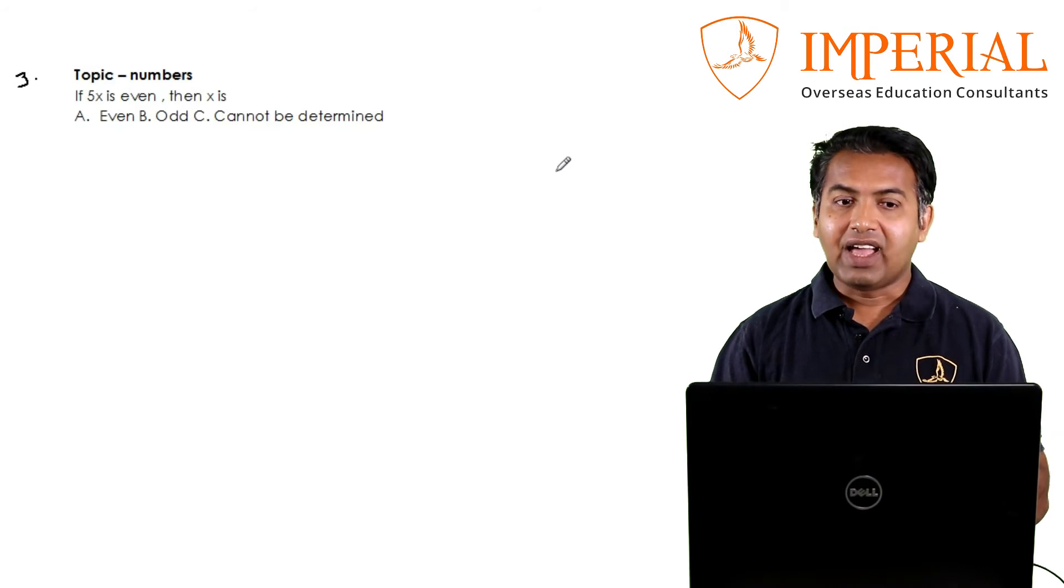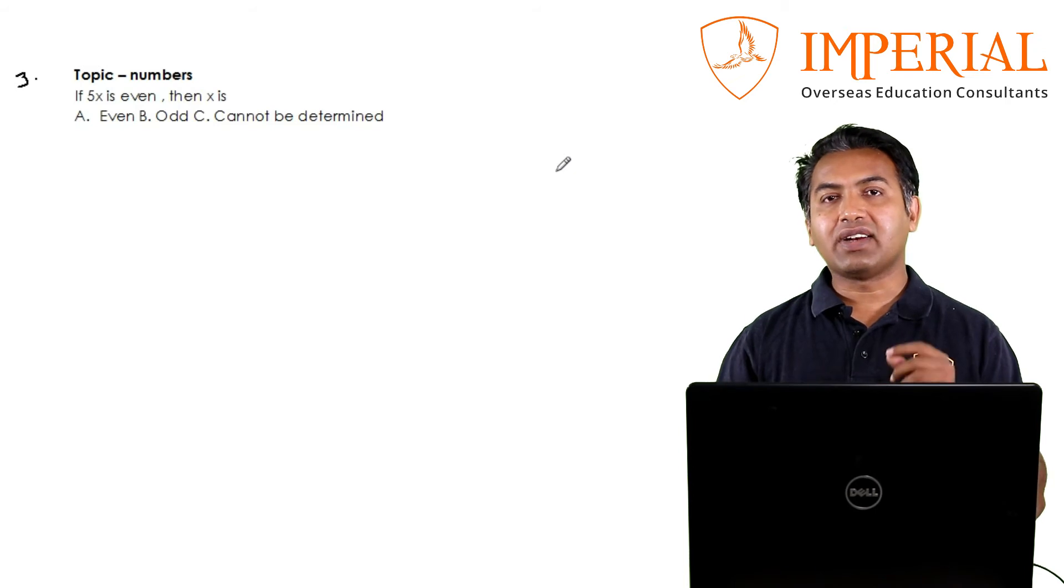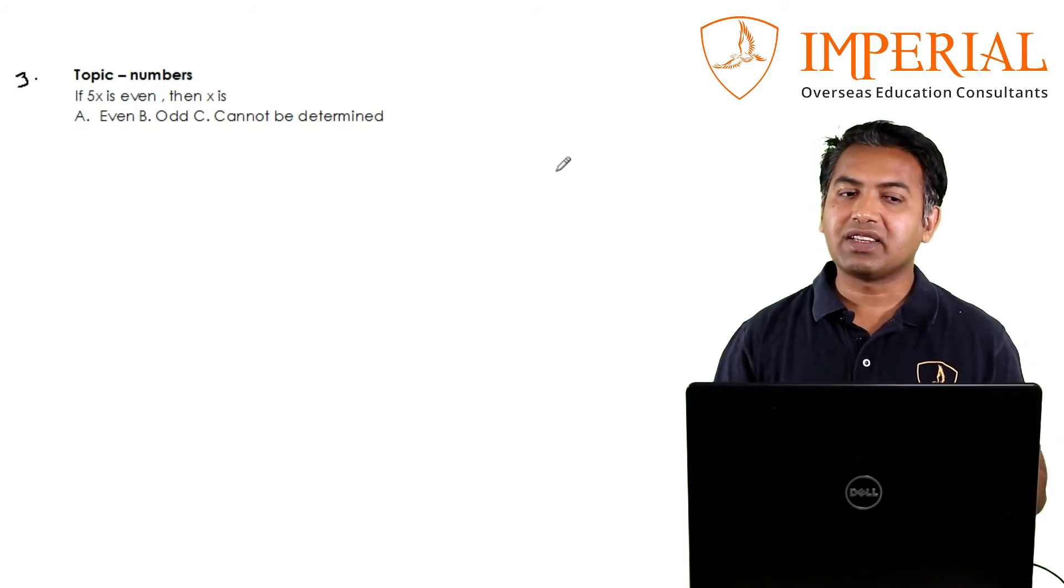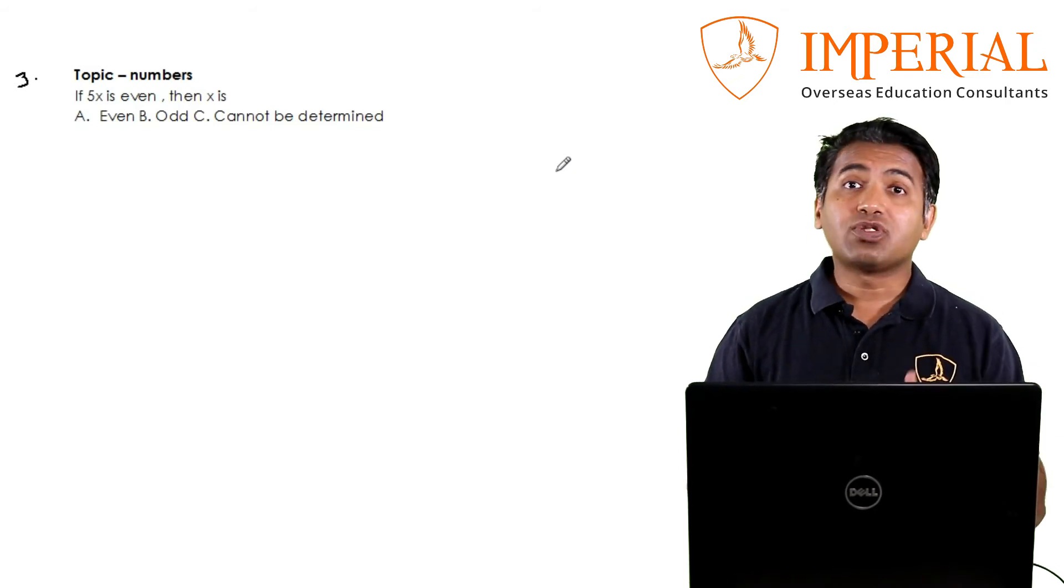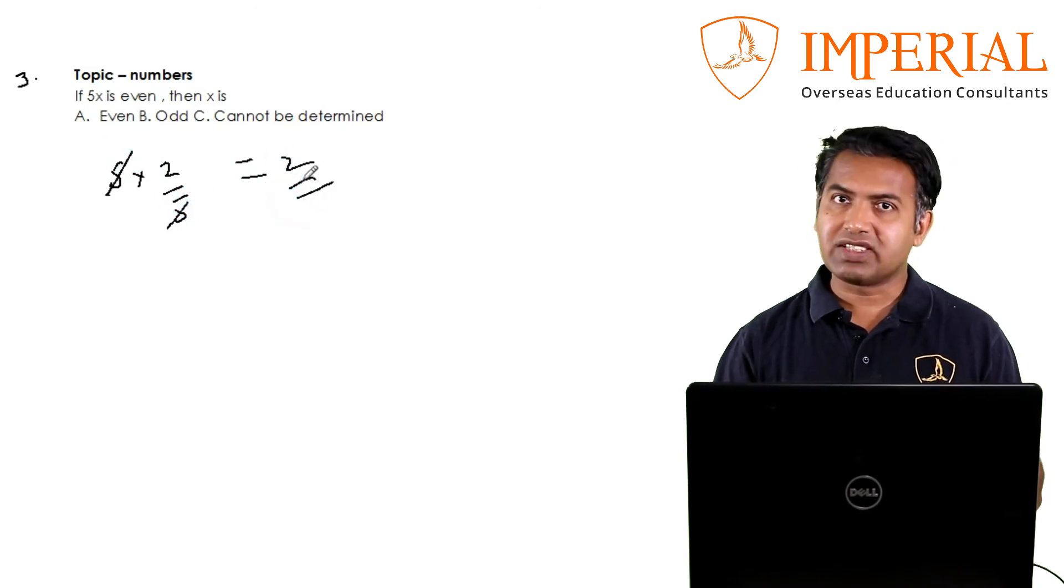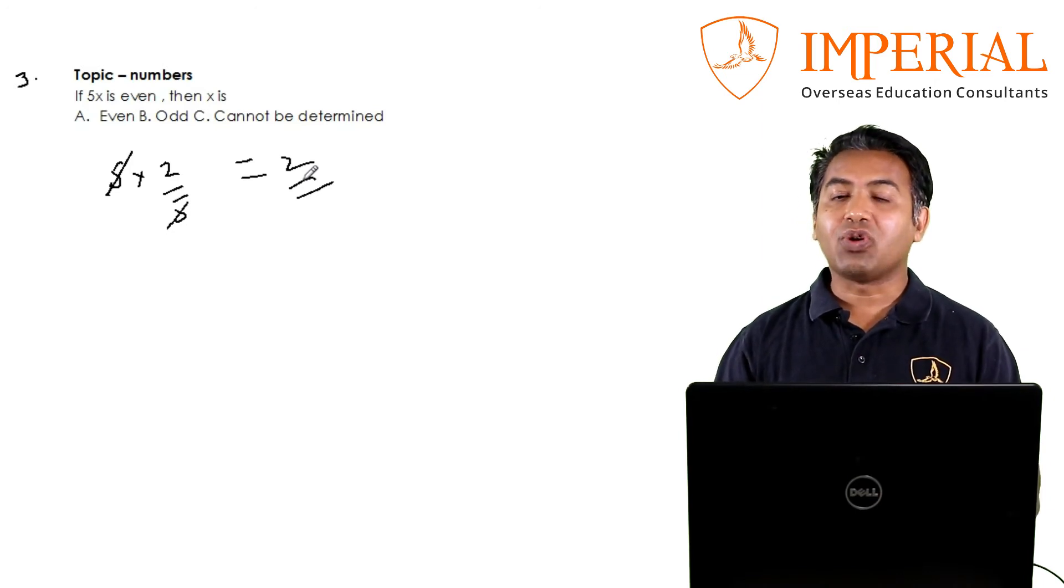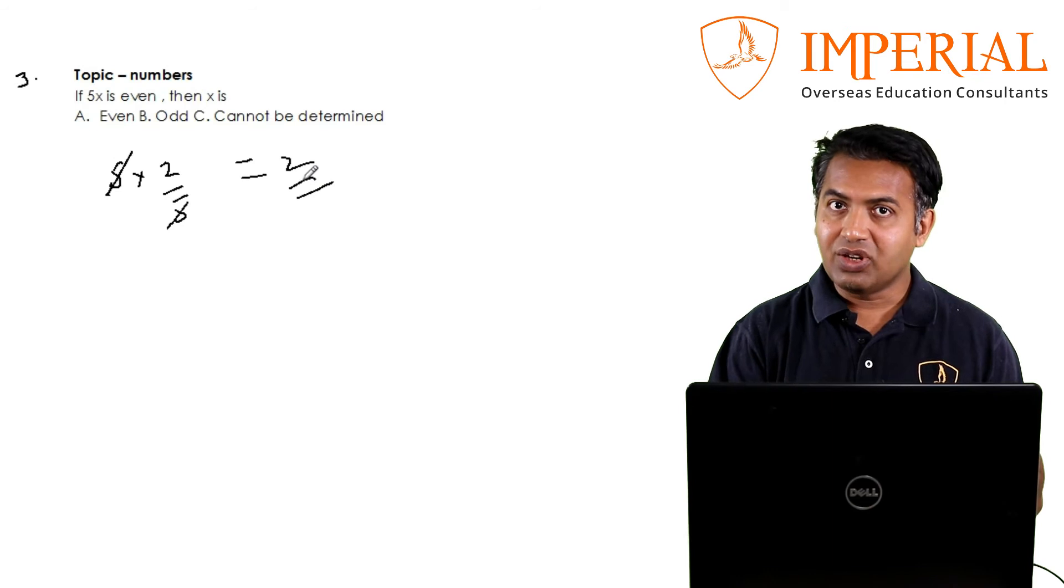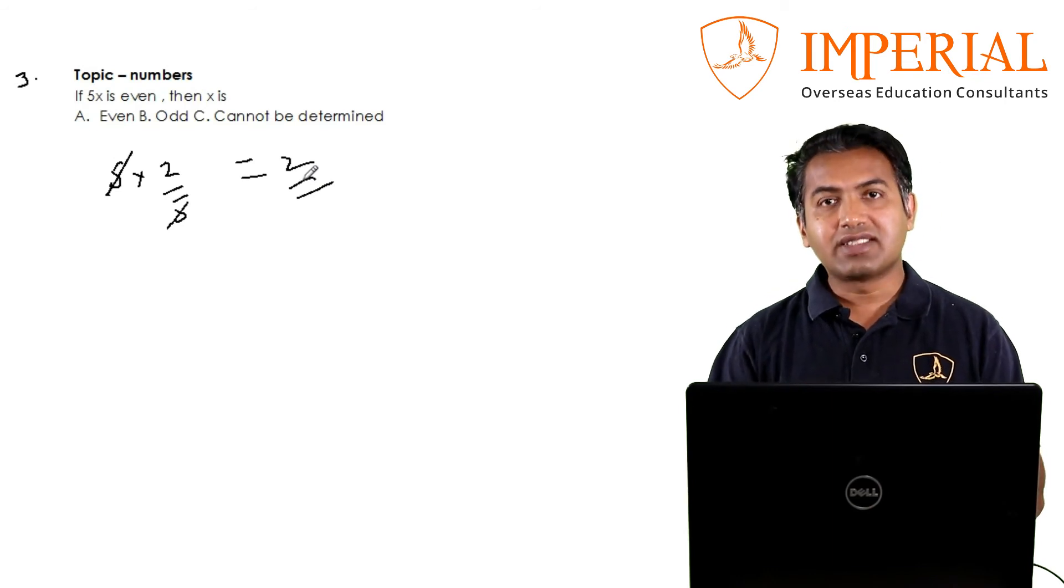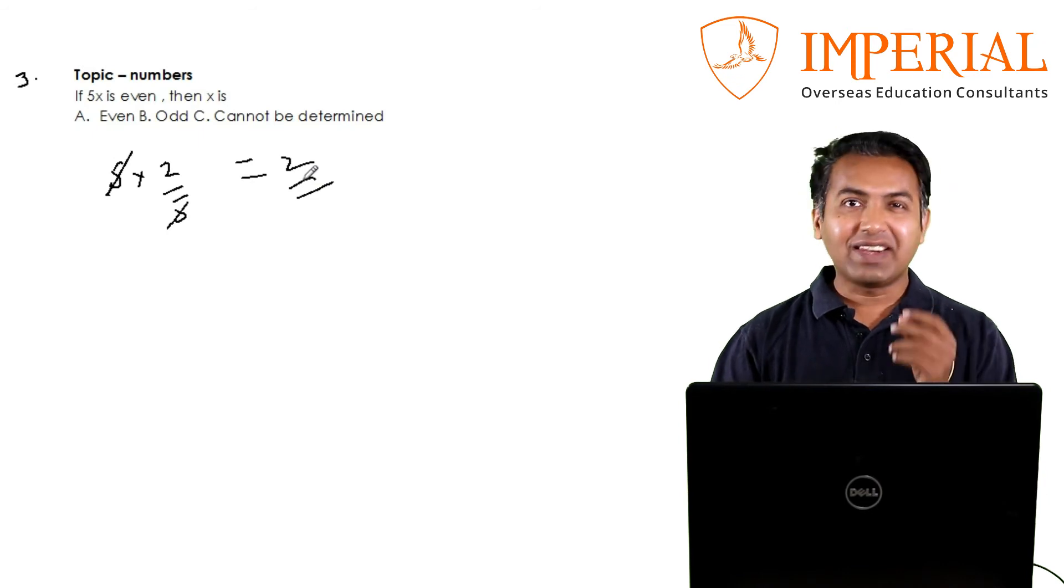Yes, your assumption is that x is an integer. Has it been mentioned? No. In the test, remember GRE tests you that you don't make any assumptions. Do not make any assumption. Here x can also be a fraction. For example, x could be 2 by 5, in which case 5x is 2, which is even, but x in this case is a fraction. So your answer here is it cannot be determined. It could be even or it could be a fraction such that the product of 5x is even. Very subtle, right?